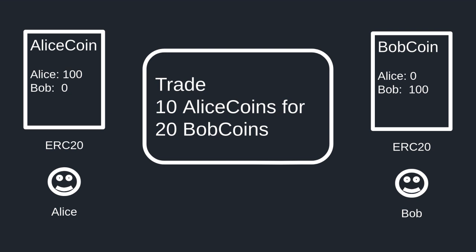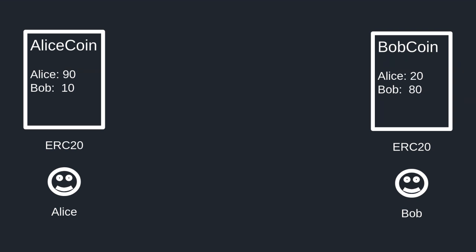Let's say that Alice has 100 Alice coin and Bob has 100 Bob coin and they want to exchange 10 Alice coins for 20 Bob coins, so that after the trade Alice will have 90 Alice coin and Bob will have 10. Alice will also have 20 Bob coin and Bob will have 80.